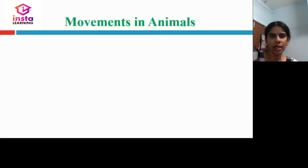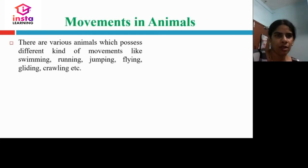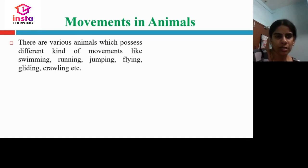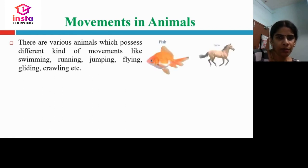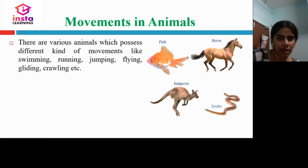Let us now discuss the movements in various animals. There are various animals which possess different kinds of movements, like swimming, running, jumping, flying, gliding, and crawling.